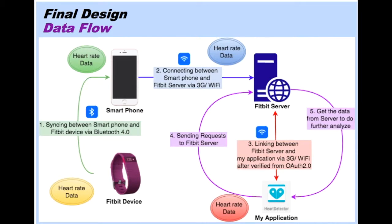My final design is generated. In the data flow diagram, after synchronizing between the Fitbit device and the smartphone, the raw data of heart rate will be sent to the smartphone. Then the data will be uploaded to the Fitbit server through 3G or Wi-Fi.